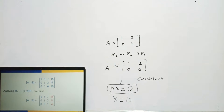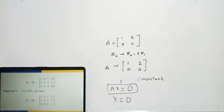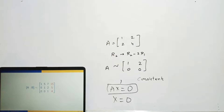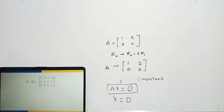In REF, there are 3 non-zero rows, so rank([A|B]) = 3. Hide the last (red) column — the REF of A also has 3 non-zero rows, so rank(A) = 3. Both ranks equal 3, which equals the number of variables (3). Therefore the system is consistent with a unique solution.